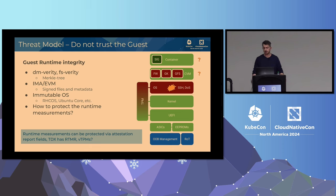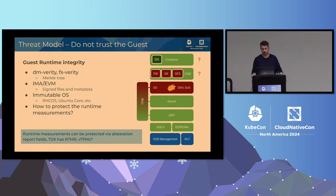Runtime measurements can be protected via attestation inside of the CVM. There are report fields in the attestation report which you can extend. TDX has an RTMR — a Runtime Measurement Register — which is essentially a TPM PCR register where you can extend hashes. The community is looking into how we can leverage VTPMs in a guest.